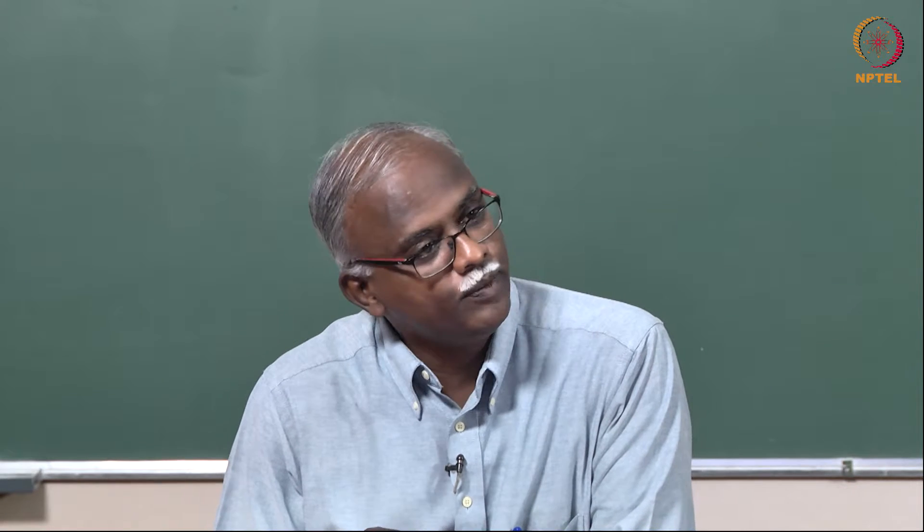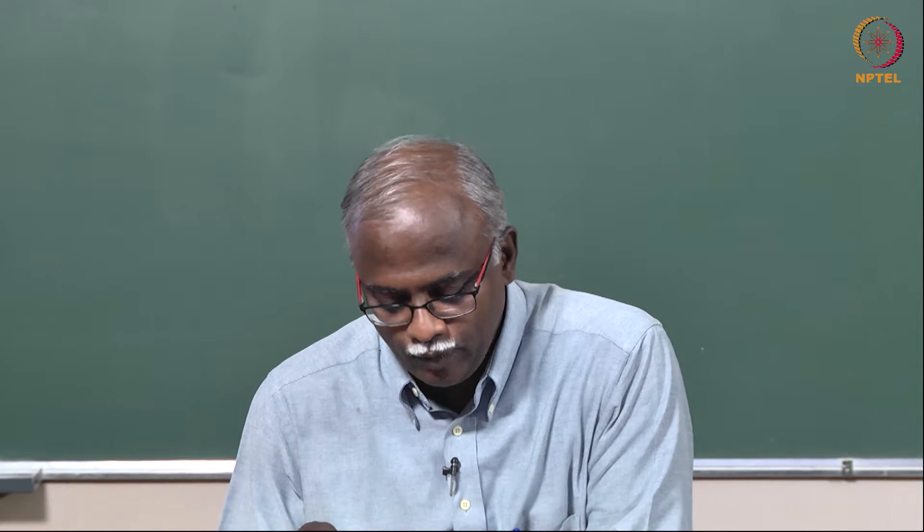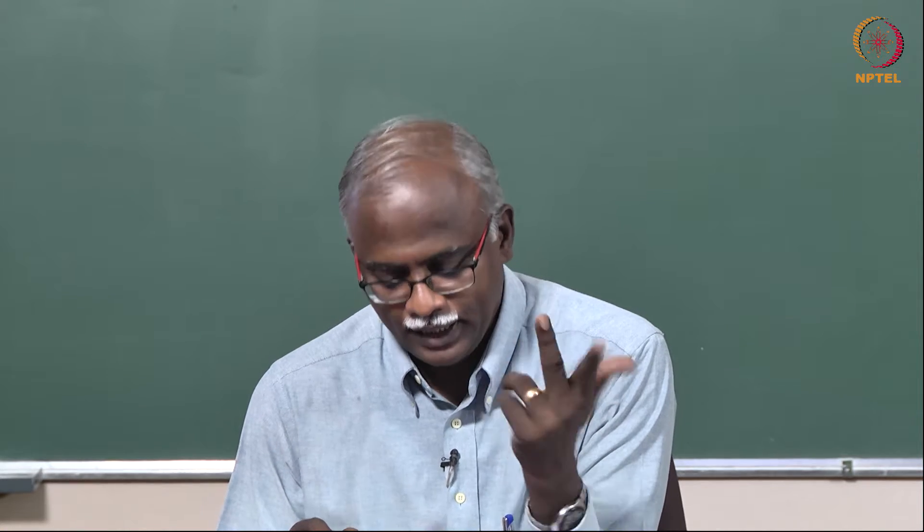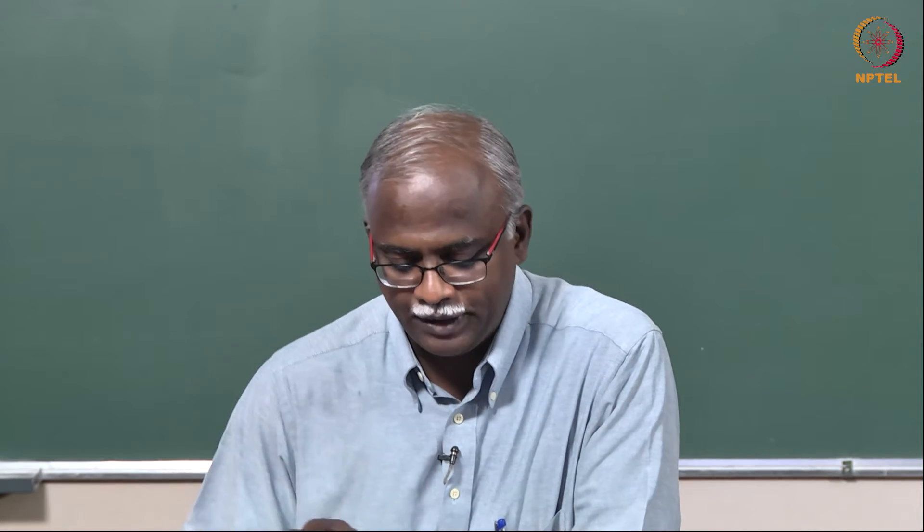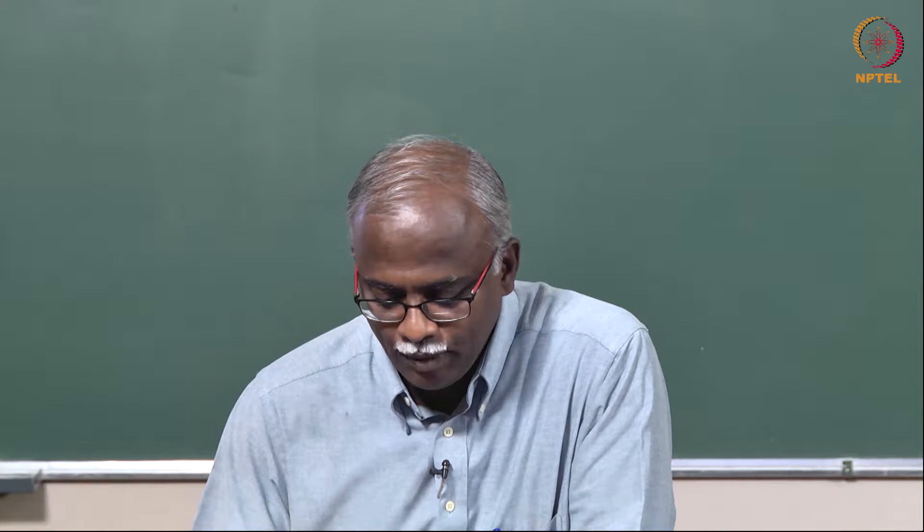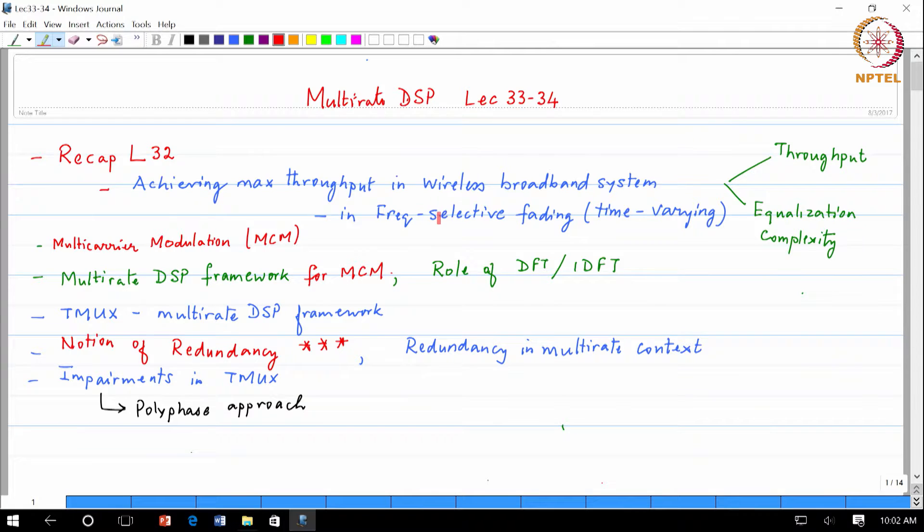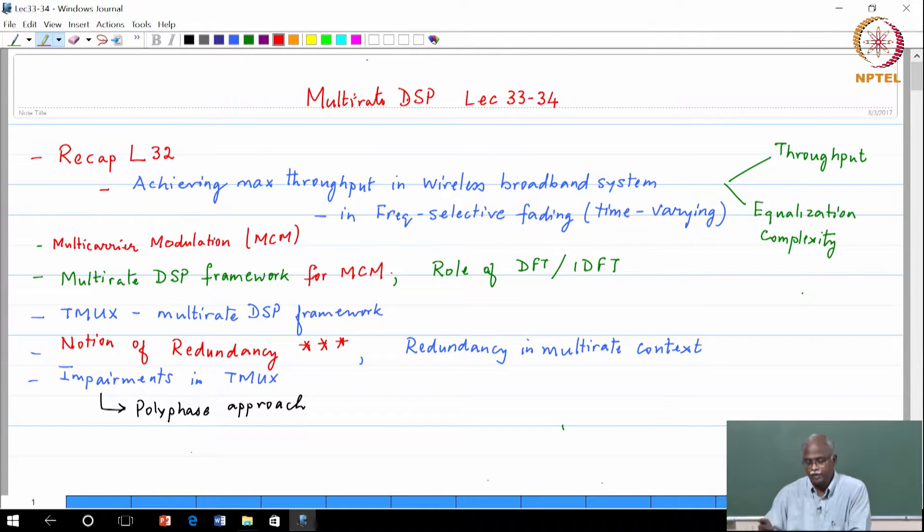We are trying to achieve maximum throughput in a wireless channel which is broadband. Basically a broadband signal is one which experiences frequency selective fading. That means the multipath components are arriving such that there is significant inter-symbol interference. It is also time varying.